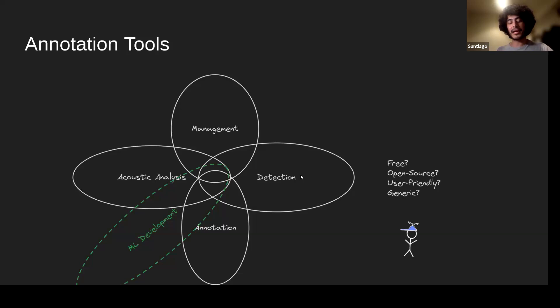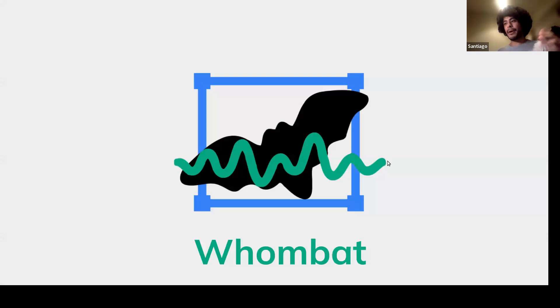This new niche requires keeping annotations, using them to train machine learning models, evaluating those models with the annotations, learning from that process about what data is missing or errors in annotations, and then reiterating. Annotation becomes the central part of machine learning development. We didn't find any tools that fit this paradigm — especially ones that are free, open source, user-friendly, and not restricted to a particular taxonomic group. Those requirements are really important for making annotation accessible to all.